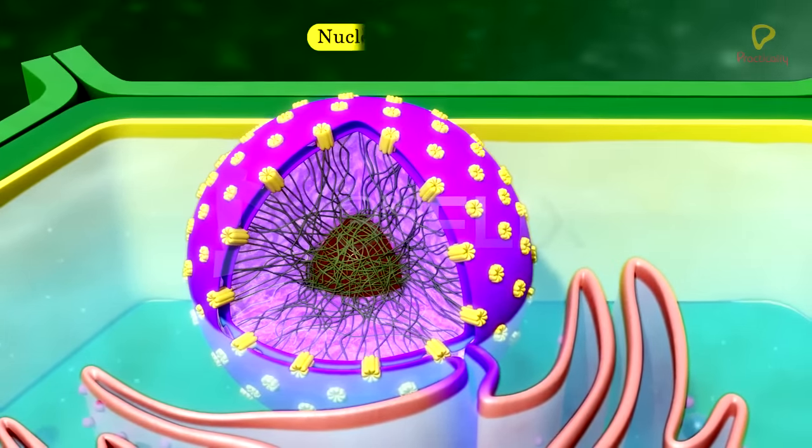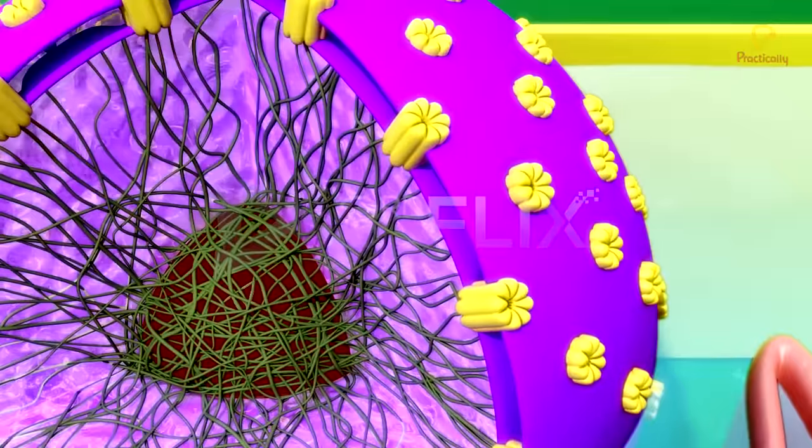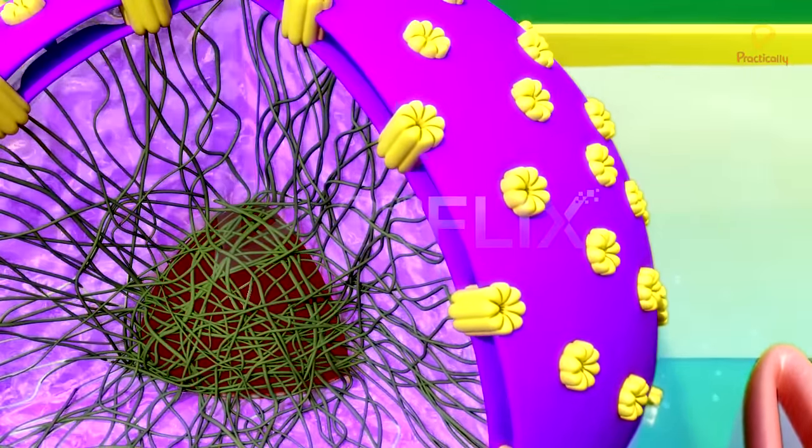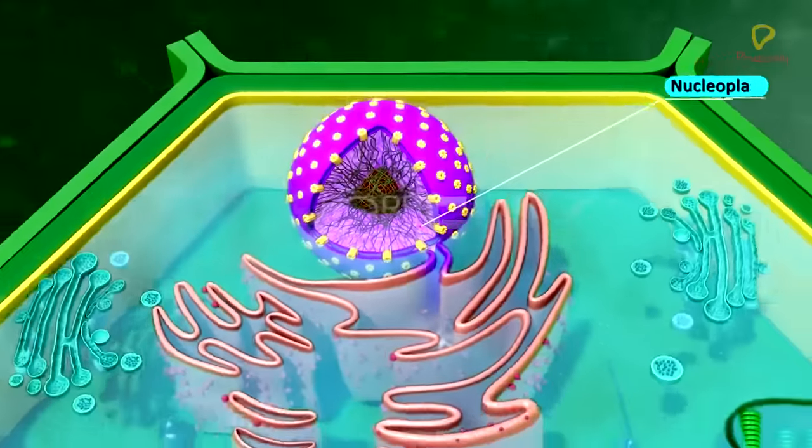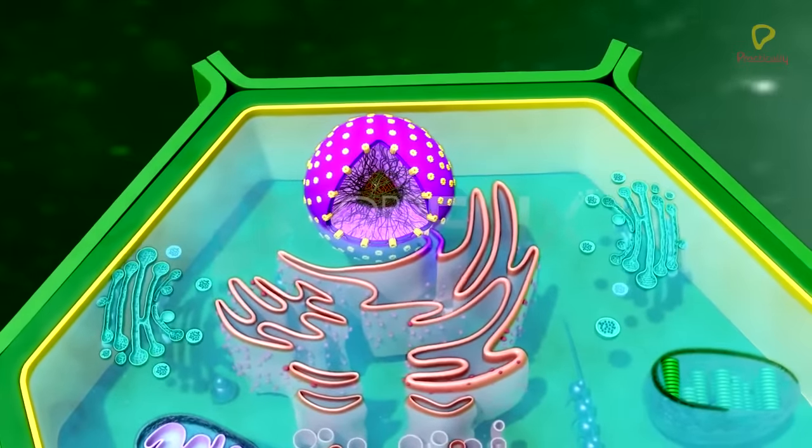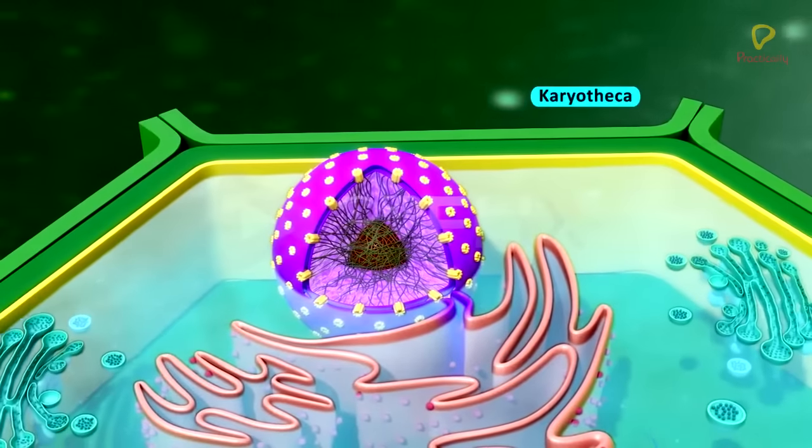Nuclear envelope is a double membrane envelope covering the nucleus. Nuclear envelope separates the nucleoplasm from the cytoplasm. Nuclear envelope is also called karyotheca.